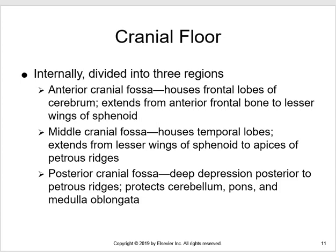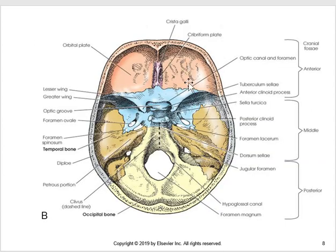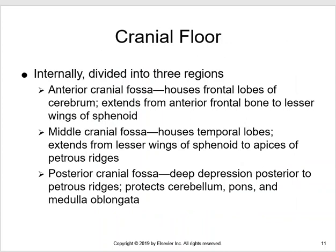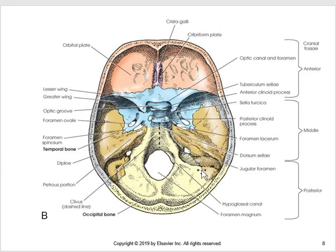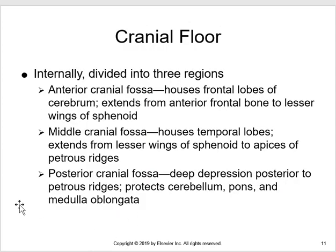The subdivisions of the cranium are the anterior cranial fossa, the middle cranial fossa, and the posterior cranial fossa. The anterior contains the frontal lobes and extends backwards to the lesser wings of the sphenoid bone. The middle portion goes from that point back to the apex of the petrous ridges, and everything past that is the posterior cranial fossa.